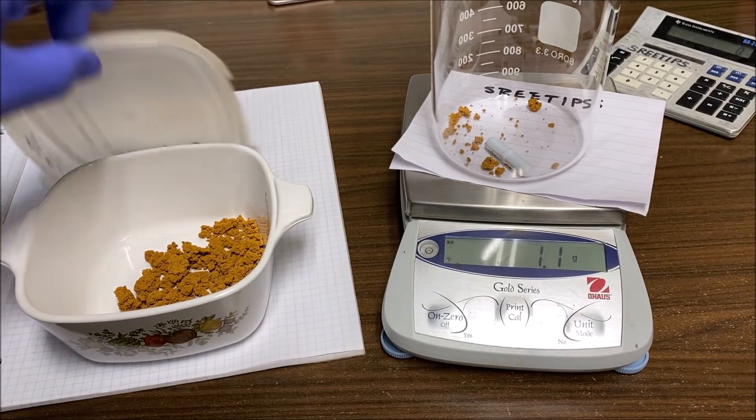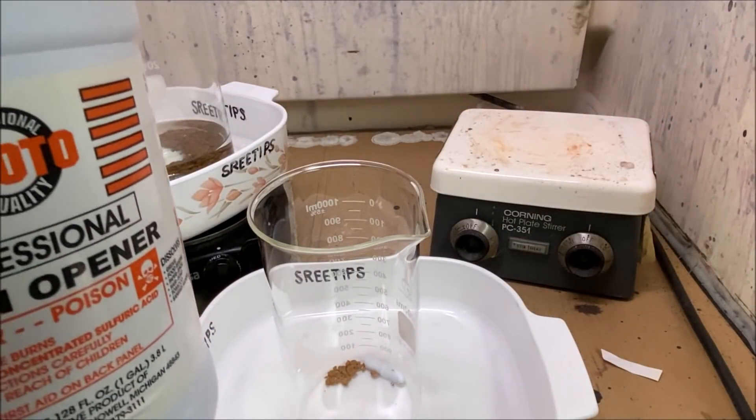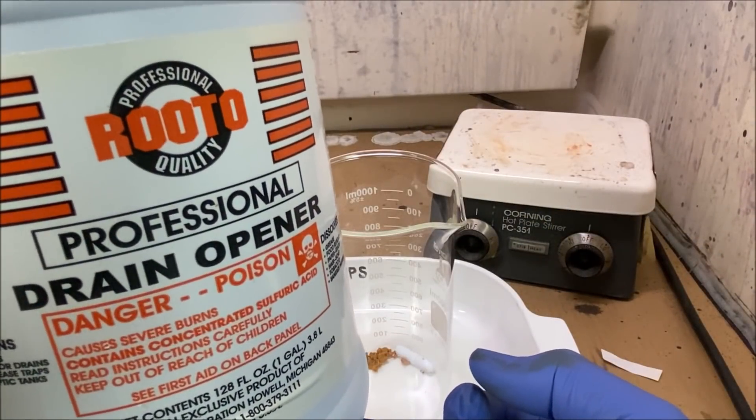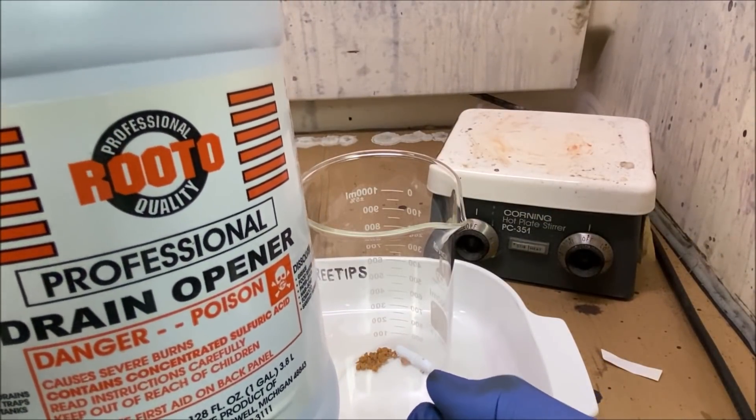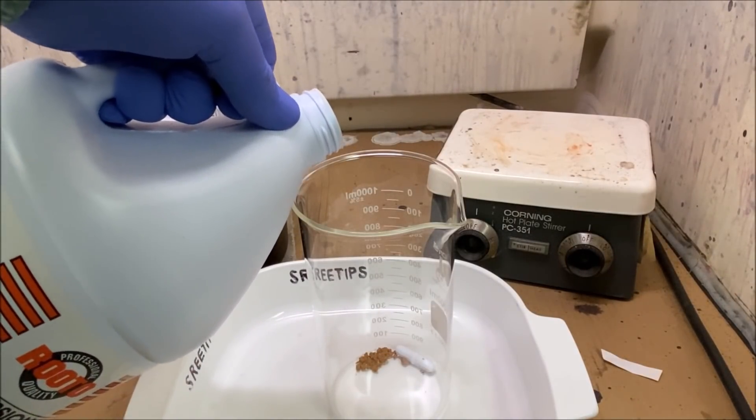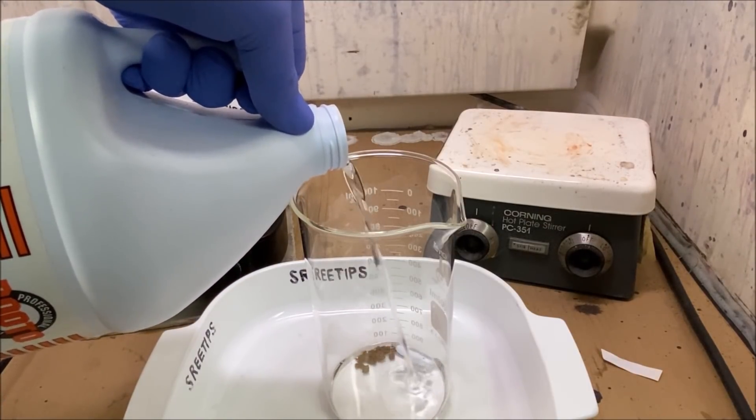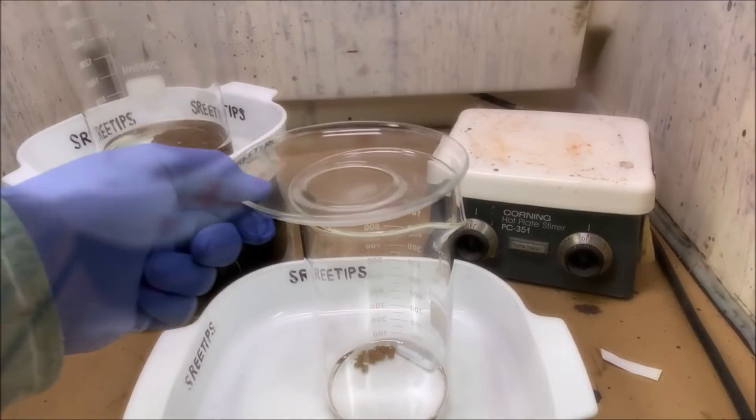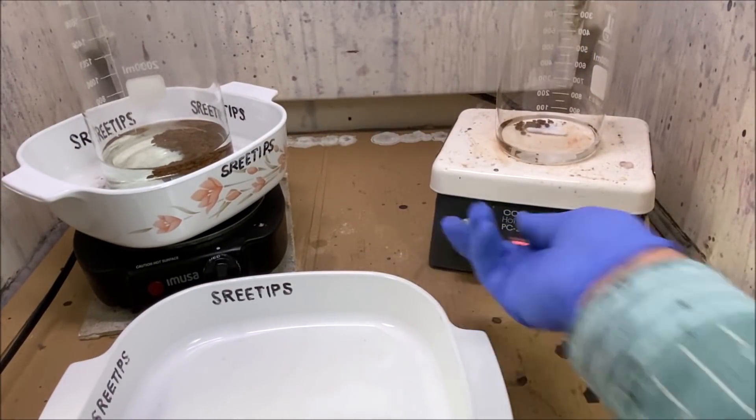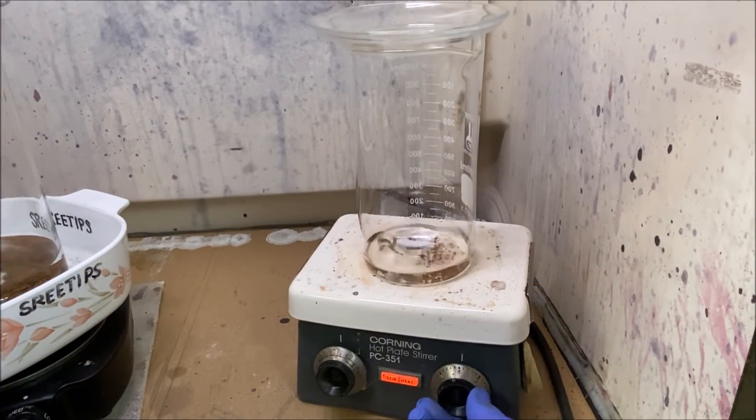1.1 grams of high purity gold for this experiment. What we'll do is add a small quantity of sulfuric acid. This is Rooto professional drain cleaner, and the MSDS says it's 93 percent concentrated sulfuric acid. I'm going to add just a small quantity here, maybe about 50 milliliters, just enough to cover the gold in the bottom of this beaker. I'm going to cover this up now, set it up here on our stir plate and turn on the stir bar. I'm adding some heat, start heating the mixture up.